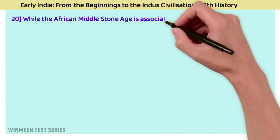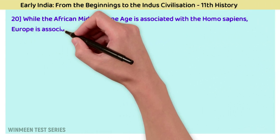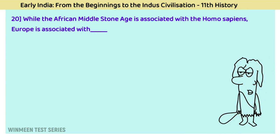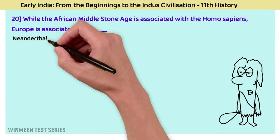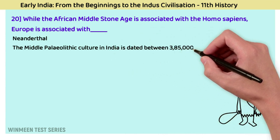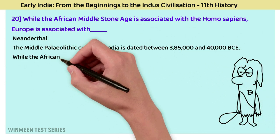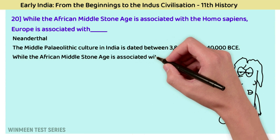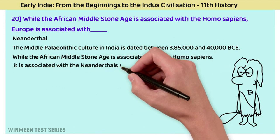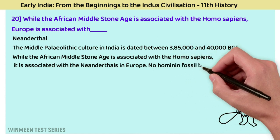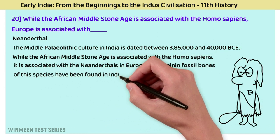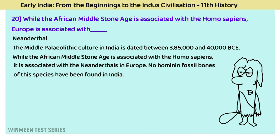Question 20: While the African Middle Stone Age is associated with Homo sapiens, Europe is associated with? The answer is Neanderthal. The Middle Paleolithic culture in India is dated between 385,000 to 40,000 BCE. While the African Middle Stone Age is associated with Homo sapiens, it is associated with Neanderthals in Europe. No hominin fossil bones of this species have been found in India.